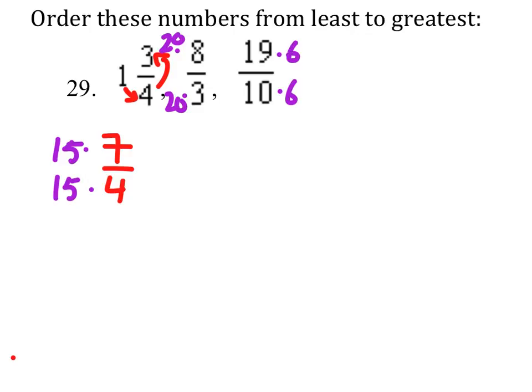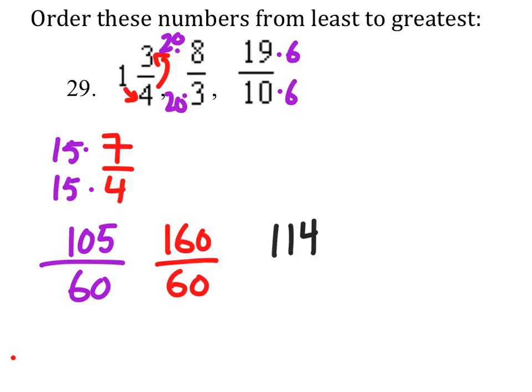15 times 7 would be 105 over 60. 8 times 20 is 160 over 60. And 19 times 6 would be 114 over 60.